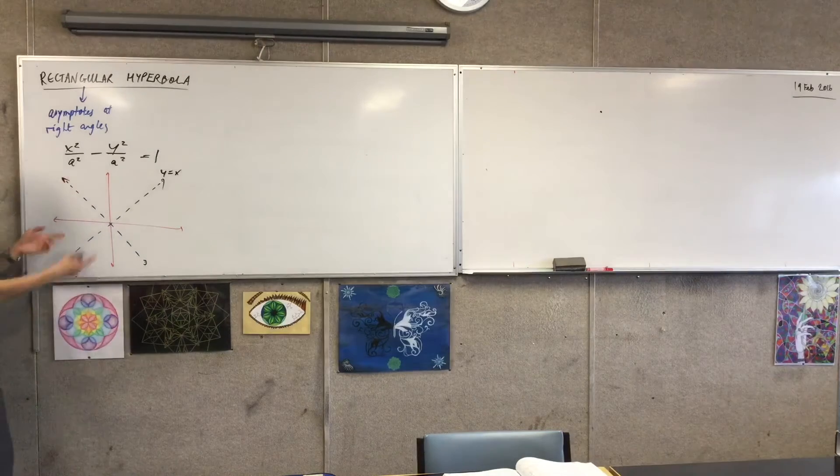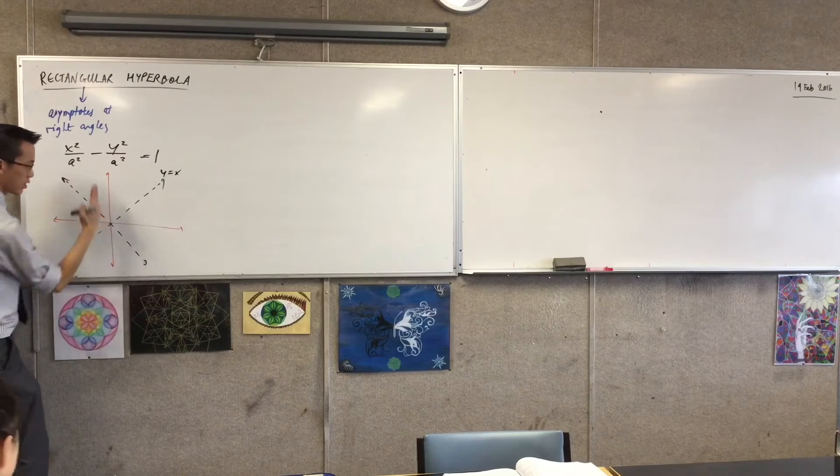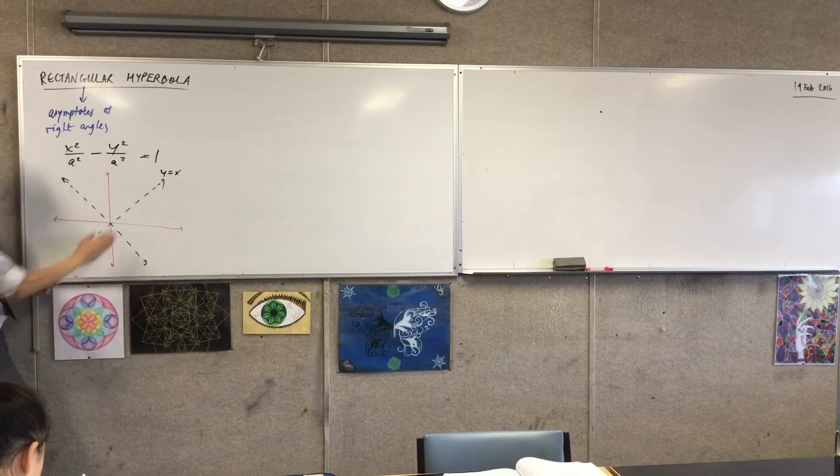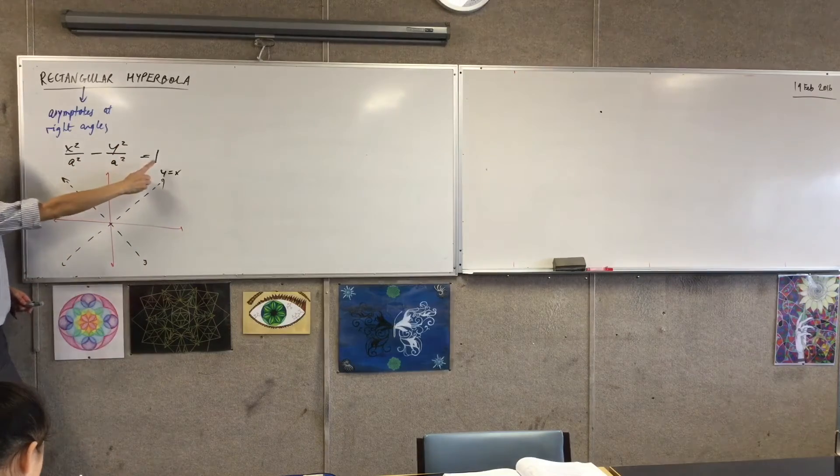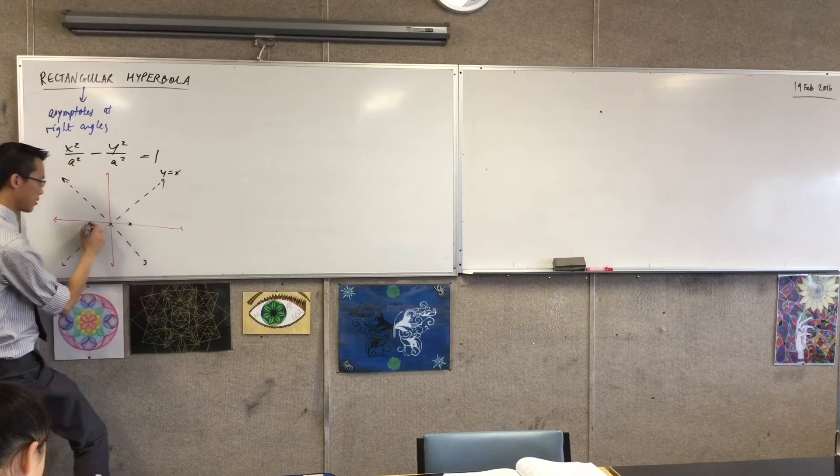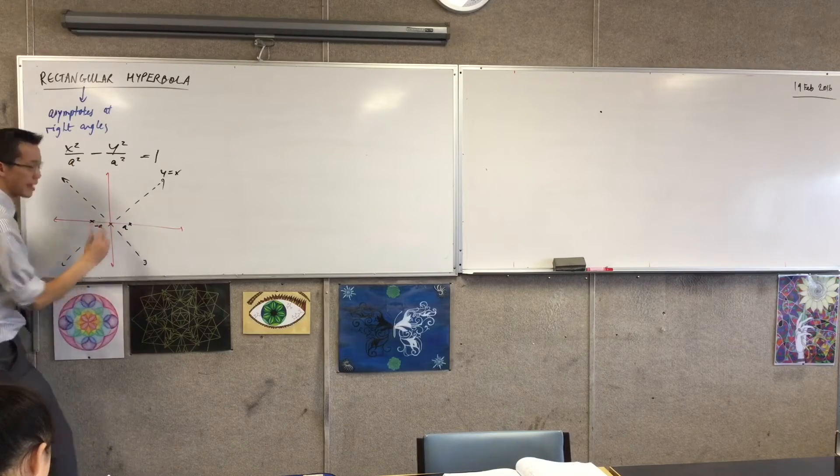So x equals 0 for this particular hyperbola, because it's oriented this way, x equals 0 will have no solution. So therefore for y equals 0, this term disappears, you're getting x squared equals a squared, so the two values you're going to get are x equals plus or minus a. So I'm just going to label that as a, and that as negative a.